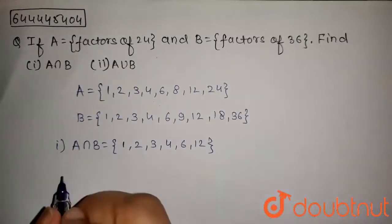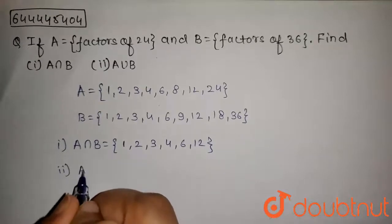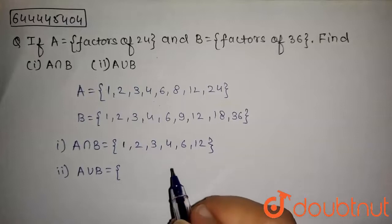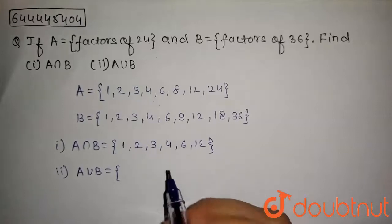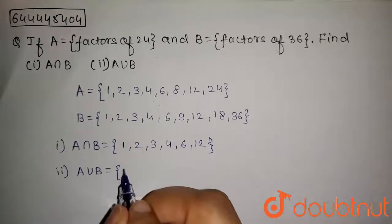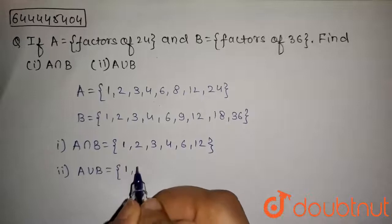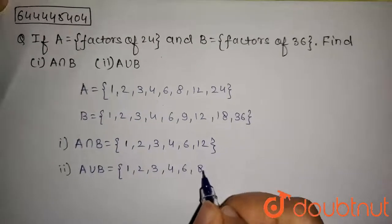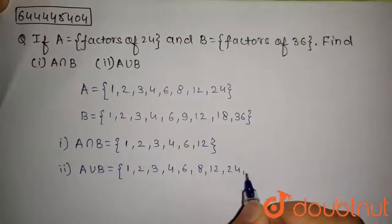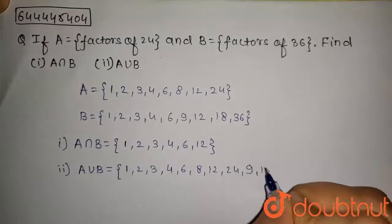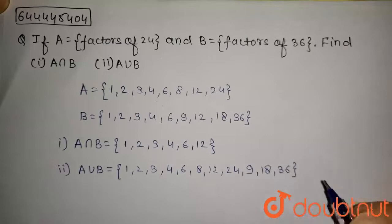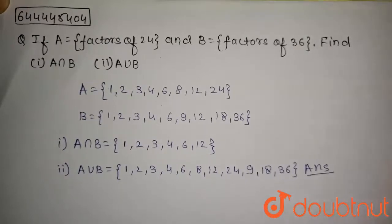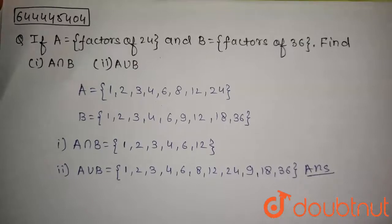We have to find second A union B. A union B will contain elements which are in A or B. So A union B will contain 1, 2, 3, 4, 6, 8, 12, 24, 9, 18 and 36. This is the answer of the given question. Thanks for watching.